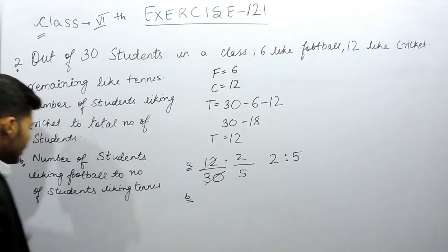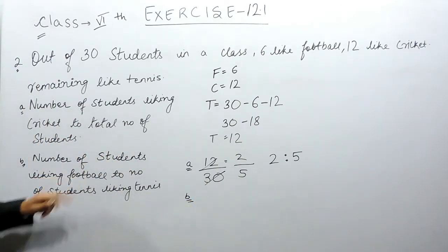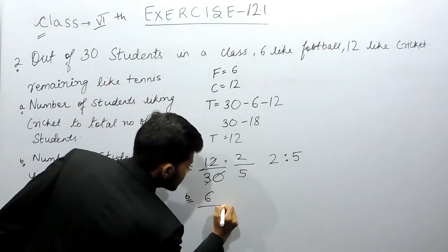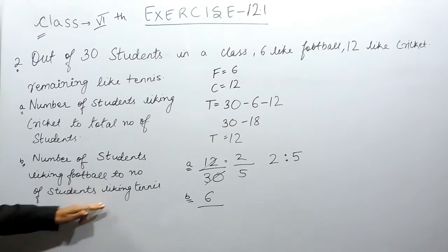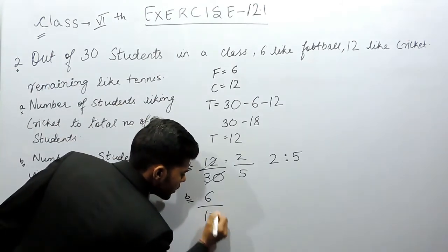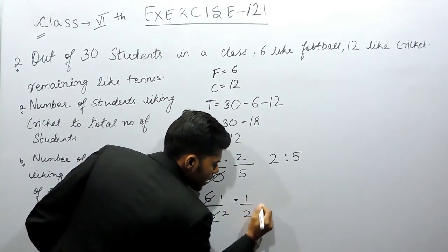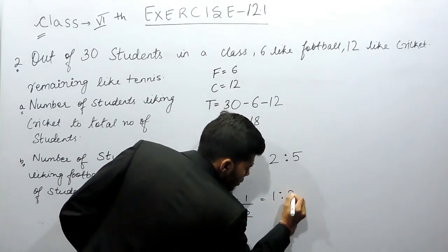In part B, it will be number of students that like football, that will be equal to 6, by number of students who like tennis, that is 12. So 6, 1 times 6, 2 times, that will be 1 by 2. That will be equal to 1 ratio 2.